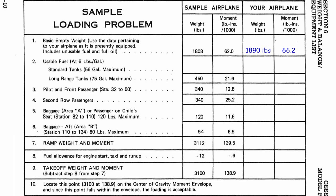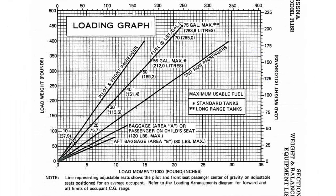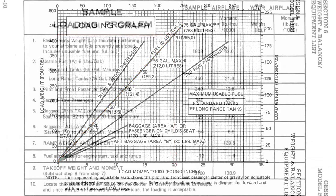Now we go to a part we have control over: usable fuel. For my flight I plan on having 70 gallons — 35 in each tank. 70 gallons weighs 420 pounds, because fuel weighs 6 pounds per gallon, and 6 times 70 is 420 pounds. Now we need to find the moment for that fuel. We go to the loading graph in Section 6 of the POH, find the fuel line, draw a line at 420 pounds until it hits the fuel line, then go straight down. 420 pounds of fuel gives us a load moment of 20, so we put 20 in the moment column.